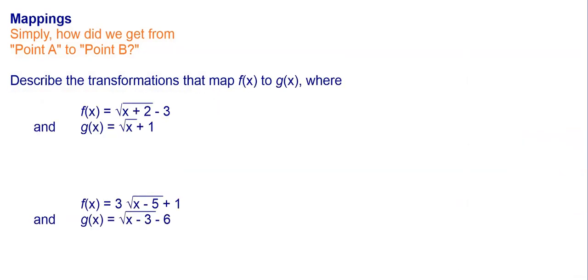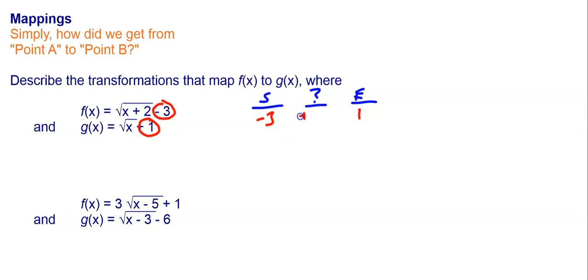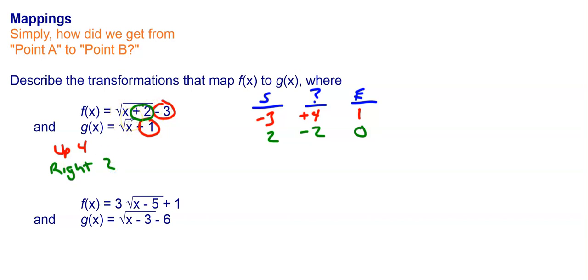We can also do this without looking at a graph. We look at where we're starting and where we're ending, then figure out how to get there. Looking at the outside: starting at negative 3, ending at plus 1 — so I have to add 4. Adding 4 to the outside means moving up 4. On the inside: starting at 2, and with only x on the inside of the other one, ending at 0 — so I subtract 2. Subtracting 2 on the inside means going right 2. So to transform from f(x) to g(x) without graphing: up 4 and right 2.